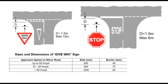The size and dimensions of the give way sign depend on approach speed on the minor street. For speed up to 50 km/h, the side of the equilateral triangle will be 60 centimeter, with a border of 45 millimeter. For a speed of 80 km/h, the side of the triangle will be 1.2 meter and the border will be 90 millimeter.